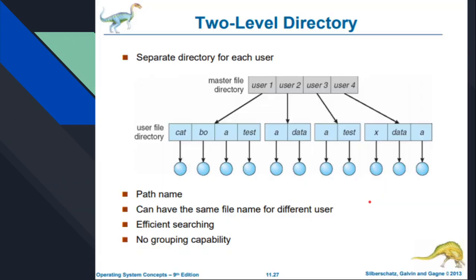Here we can see the diagram — this is a separate directory for each user. User 1 has their own directory and files. User 2 has their own directory and files. User 3 and User 4 similarly have their own files. You can see the file name 'a' appears in different directories — it is repeated in different directories but there is no problem because it is referenced from the first level as User1.a, User2.a, and so on, making a difference.